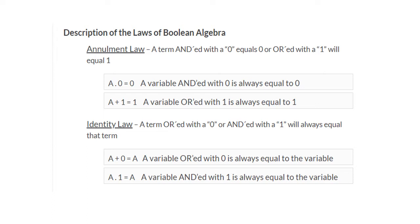And a OR 1 is equal to 1. Similar is the case here also. If the value of a is 0, then 0 OR 1 is equal to 1. If the value of a is 1, then 1 OR 1 is equal to 1. So here also, whatever the value of a — whether it is 0 or 1 — the result will always be 1.